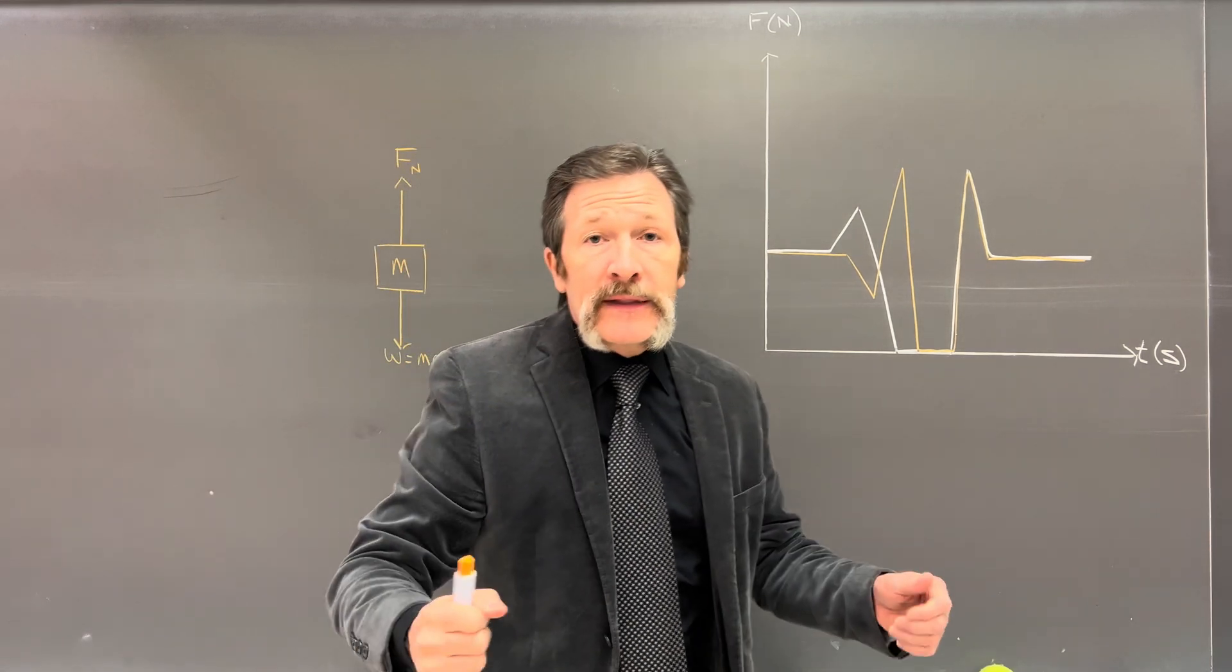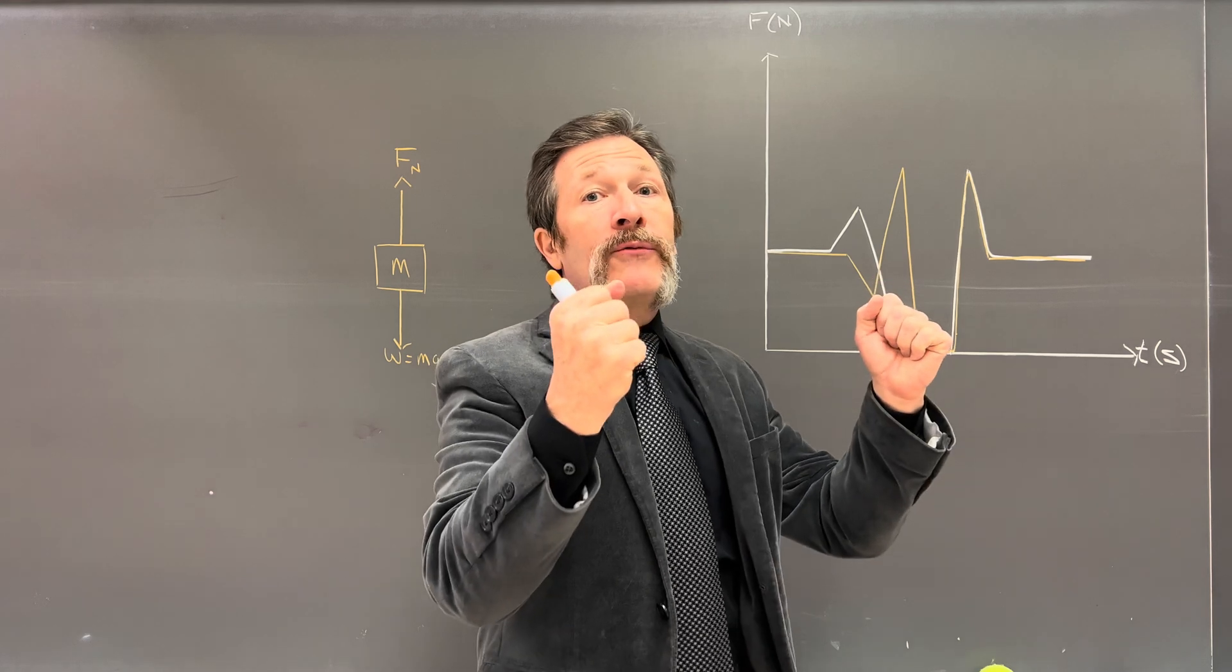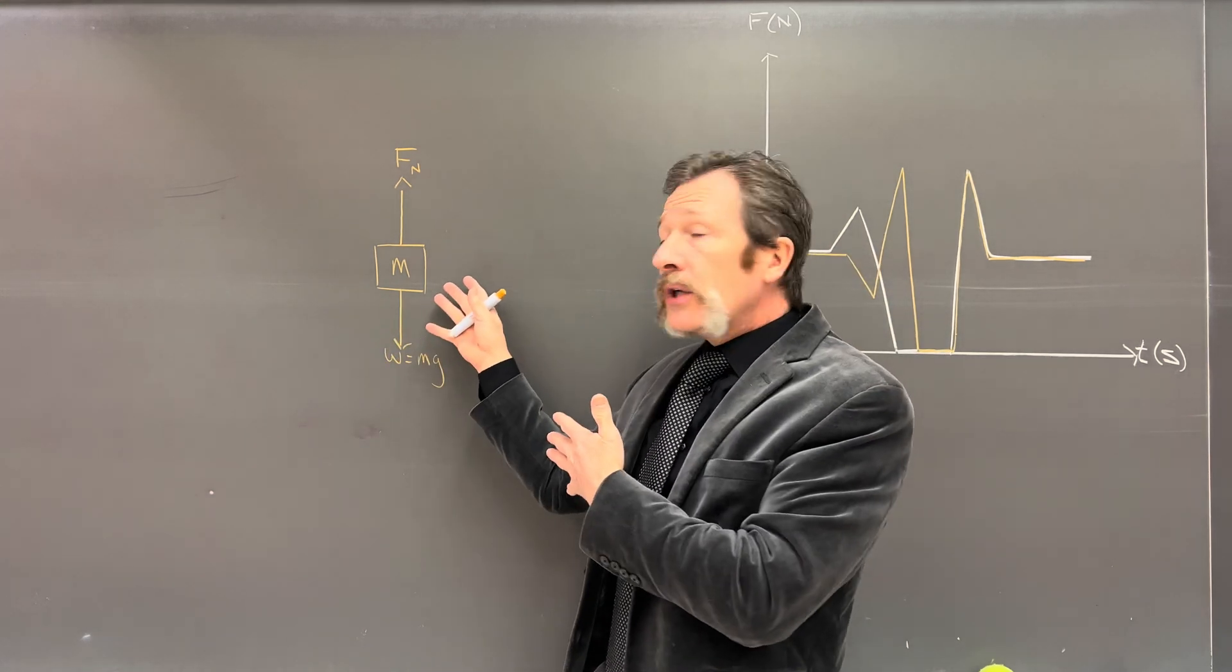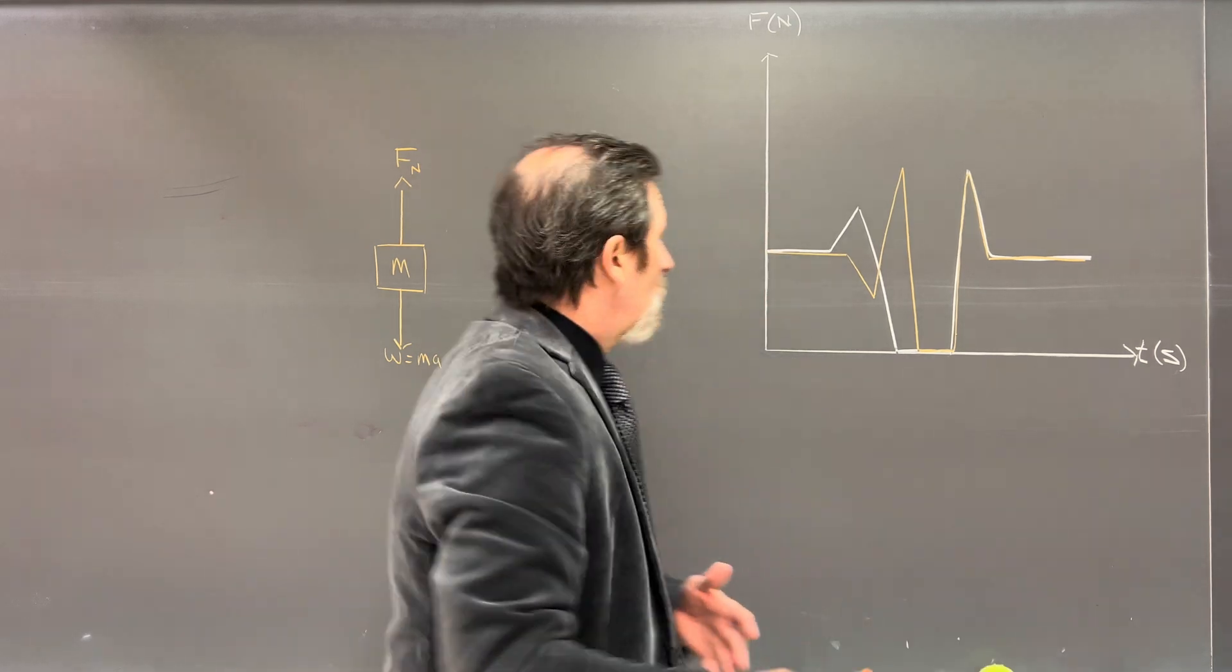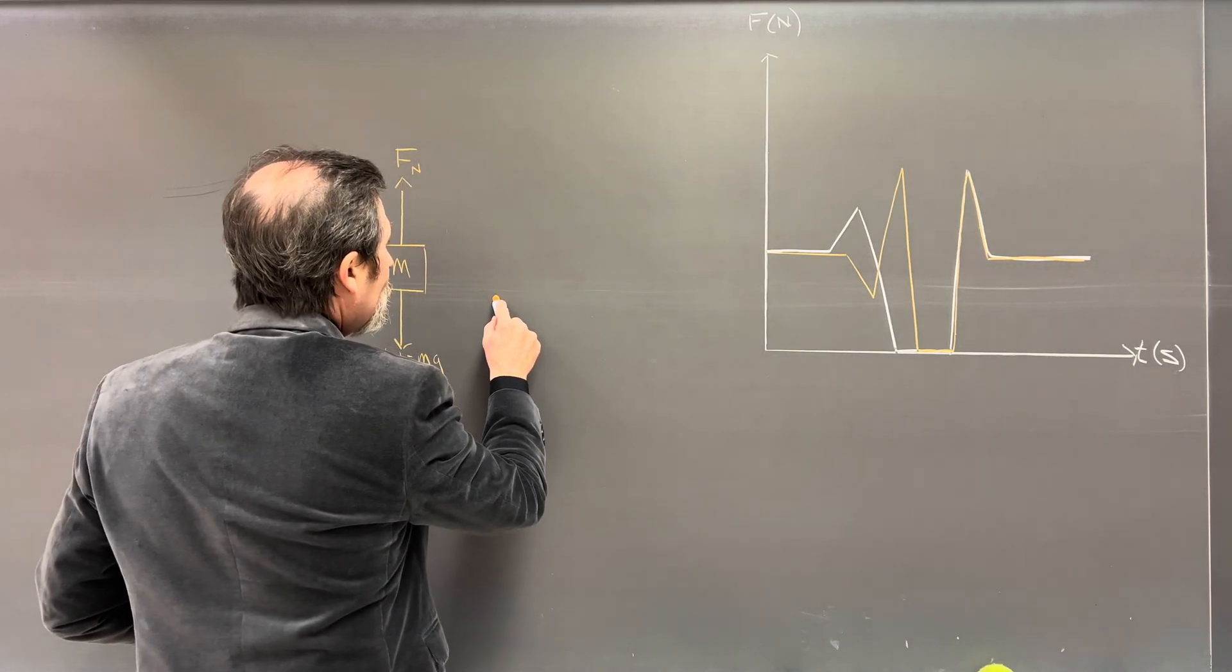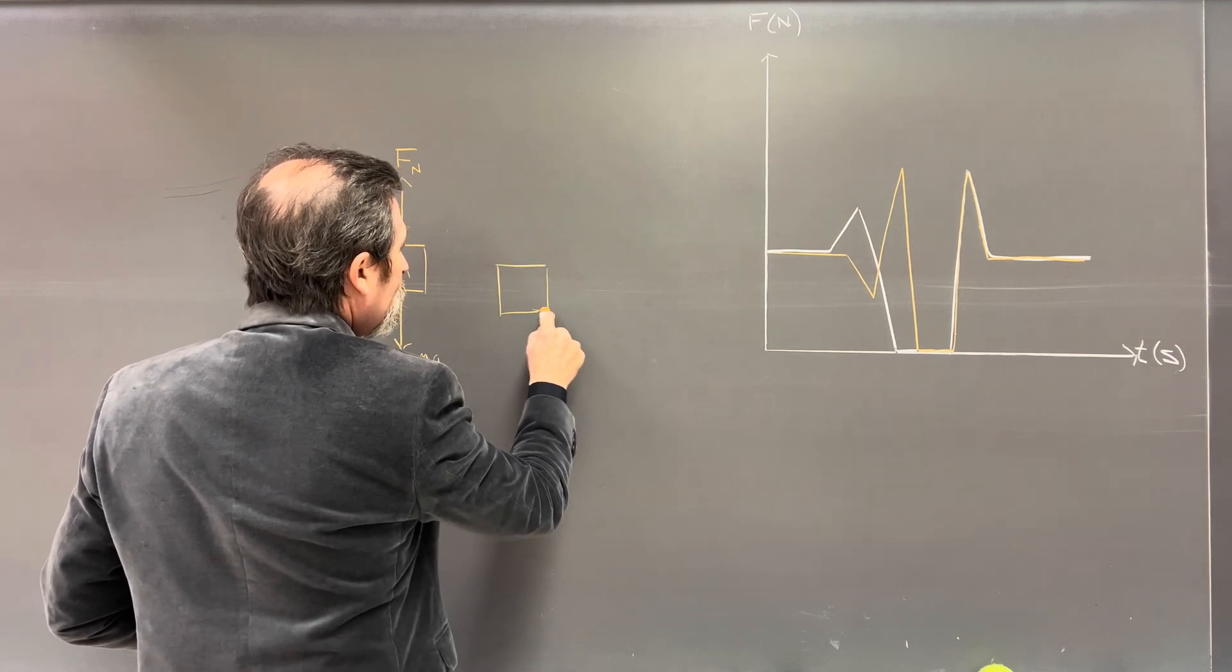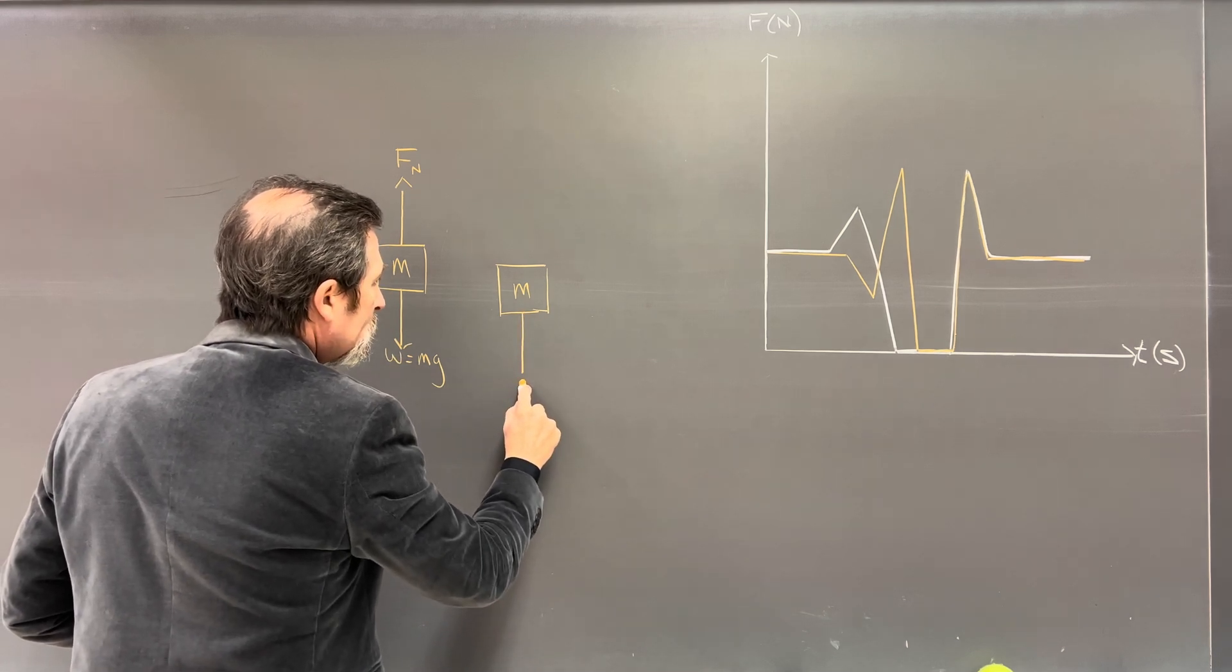But think about this: in order for me to jump up, I have to lower down before I start to accelerate up. The only way for this object to go down, I can't change my weight, I need to simply... that same box again, same mass, my weight is exactly the same as it was before.